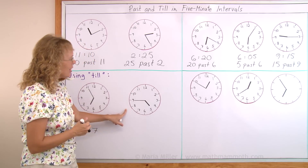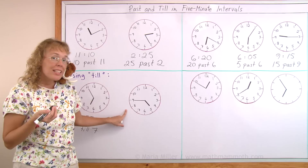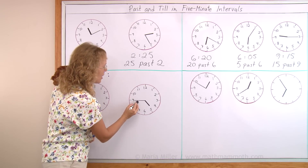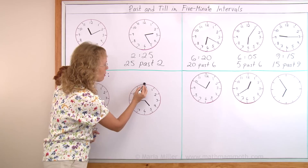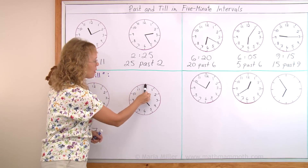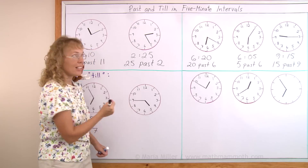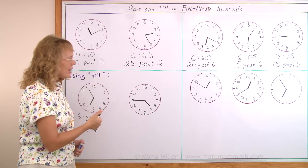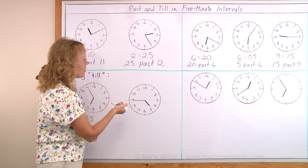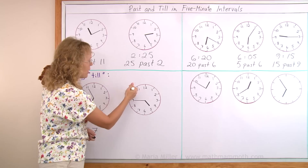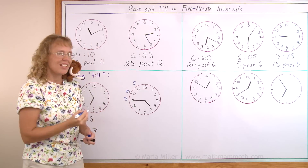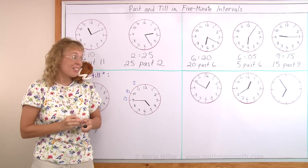Let's look at this one. We figure out how many minutes till the next whole hour — how many minutes does the minute hand need to move to get all the way up to the next whole hour, which is 5 o'clock. How many minutes till 5 o'clock? You can count by 5s backwards: 5, 10, and 15. So it's 15 minutes till 5.